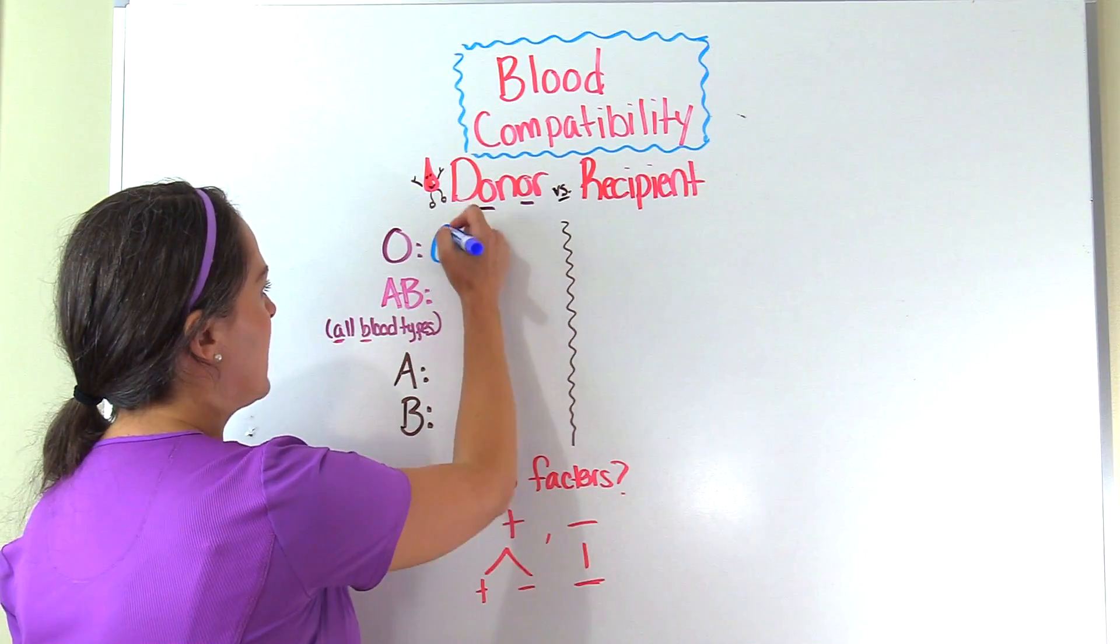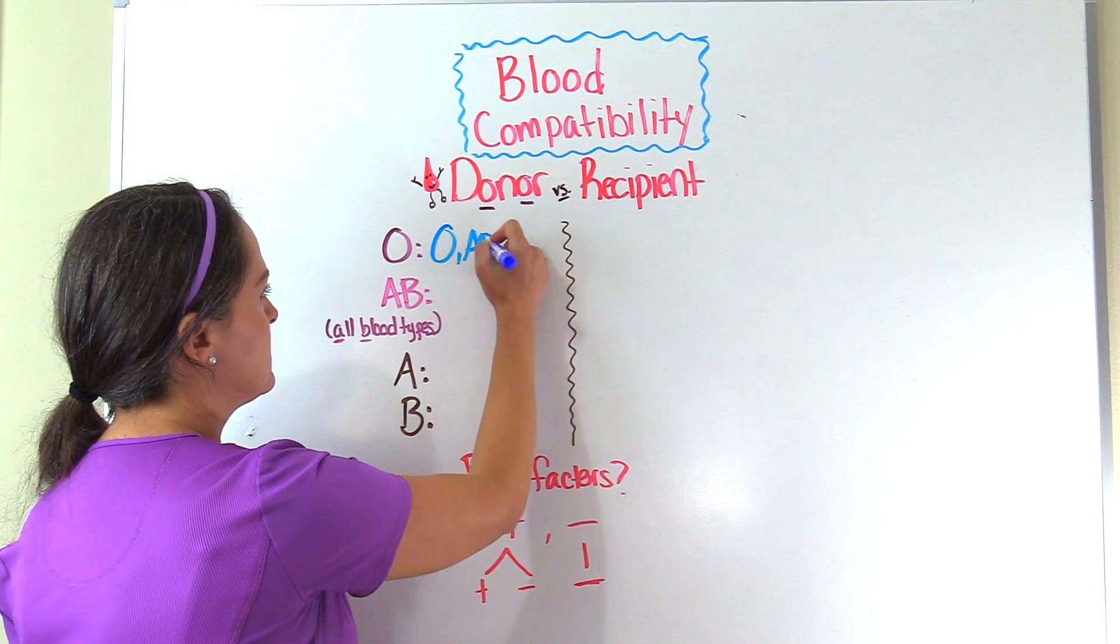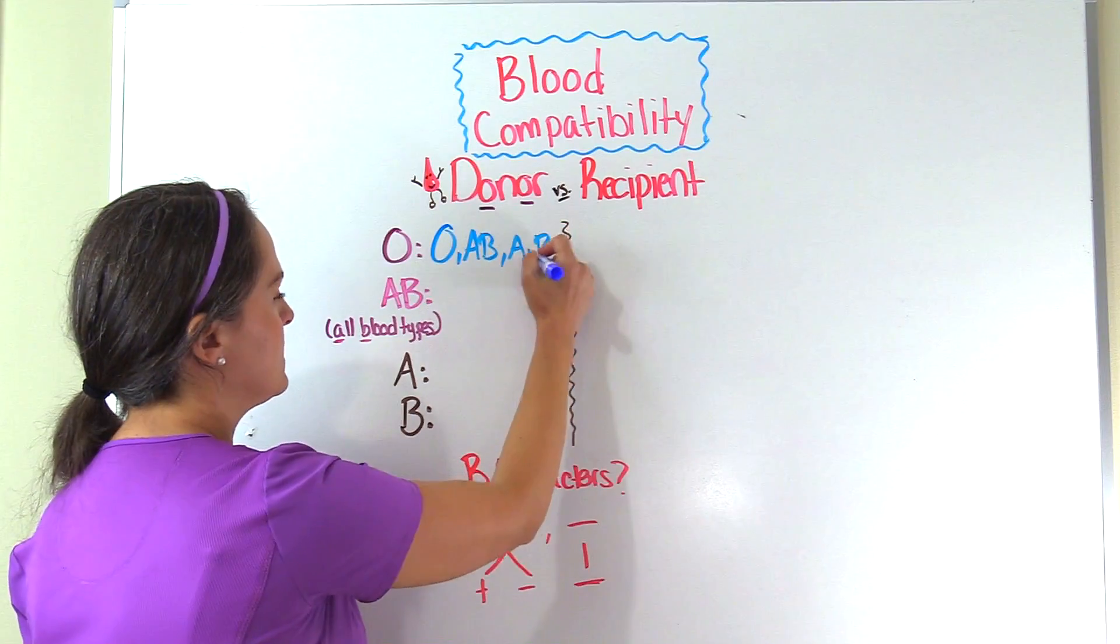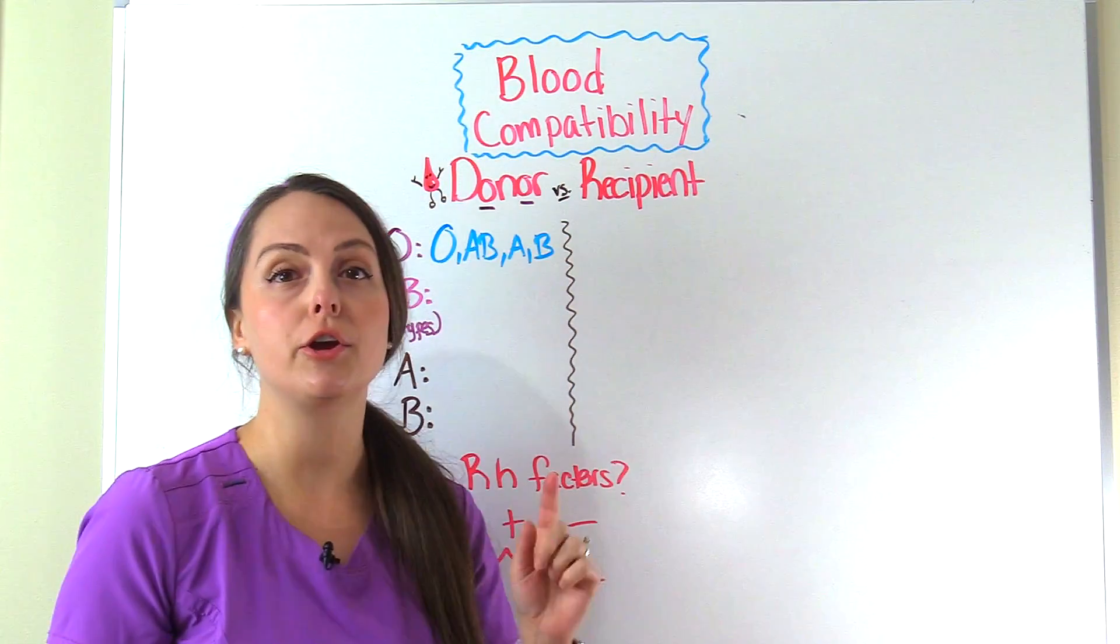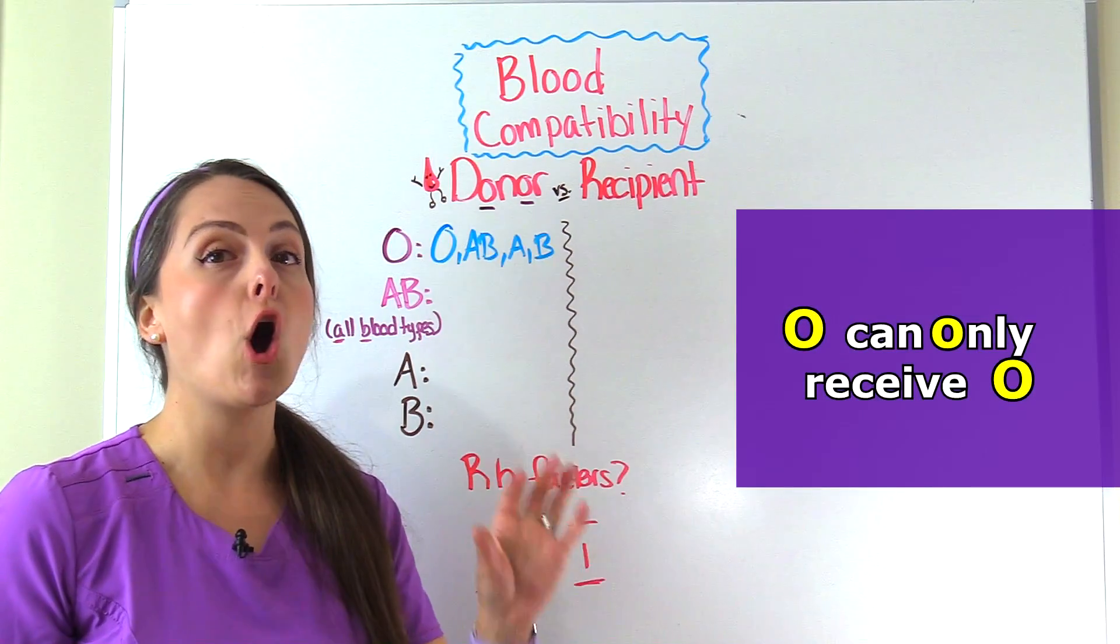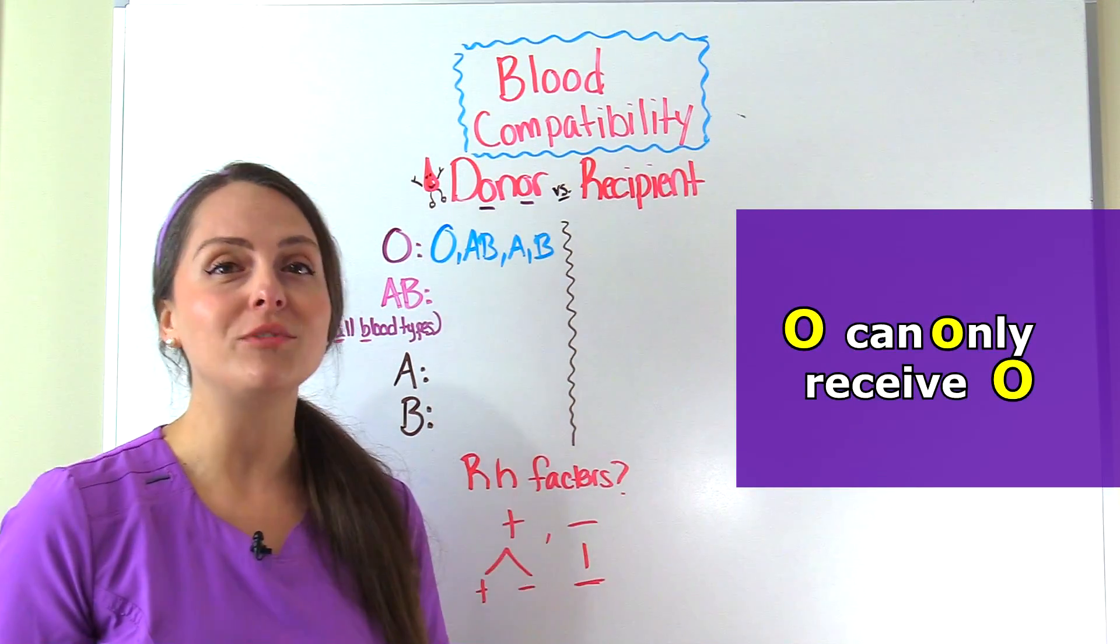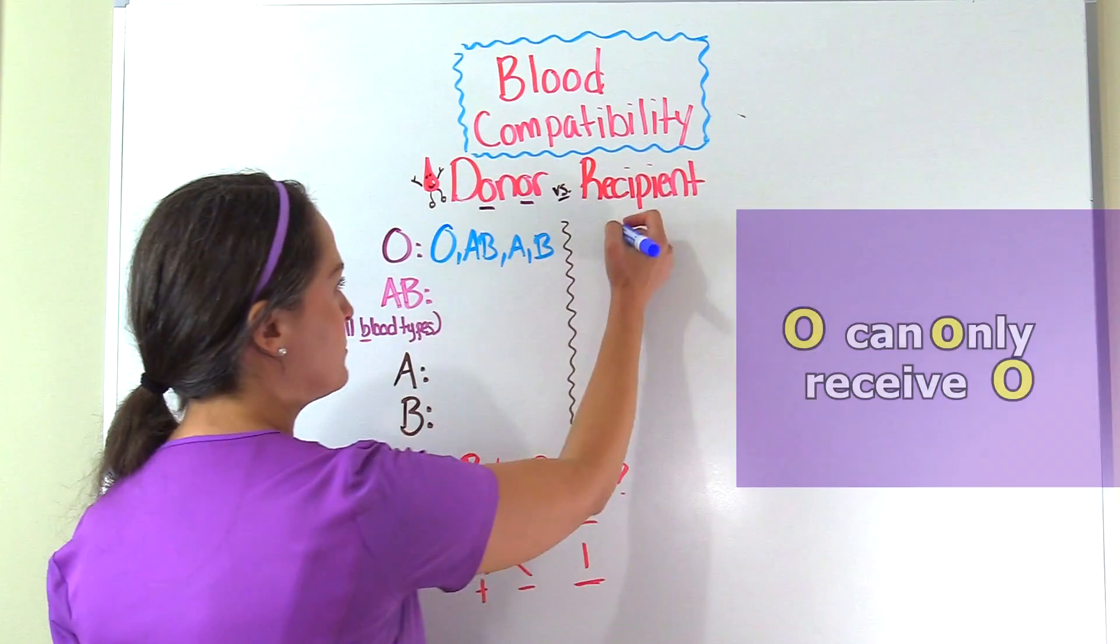O's can give to other O's, AB's, A's, and B's. Although they're generous, they are really particular about who they can receive from. They can only receive from other O's.